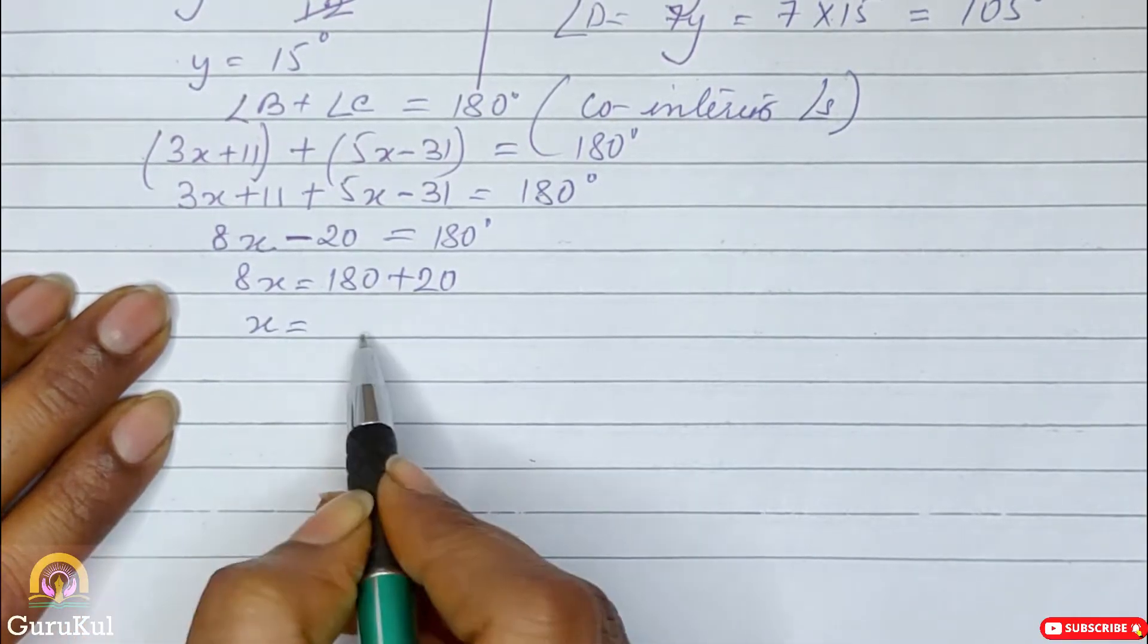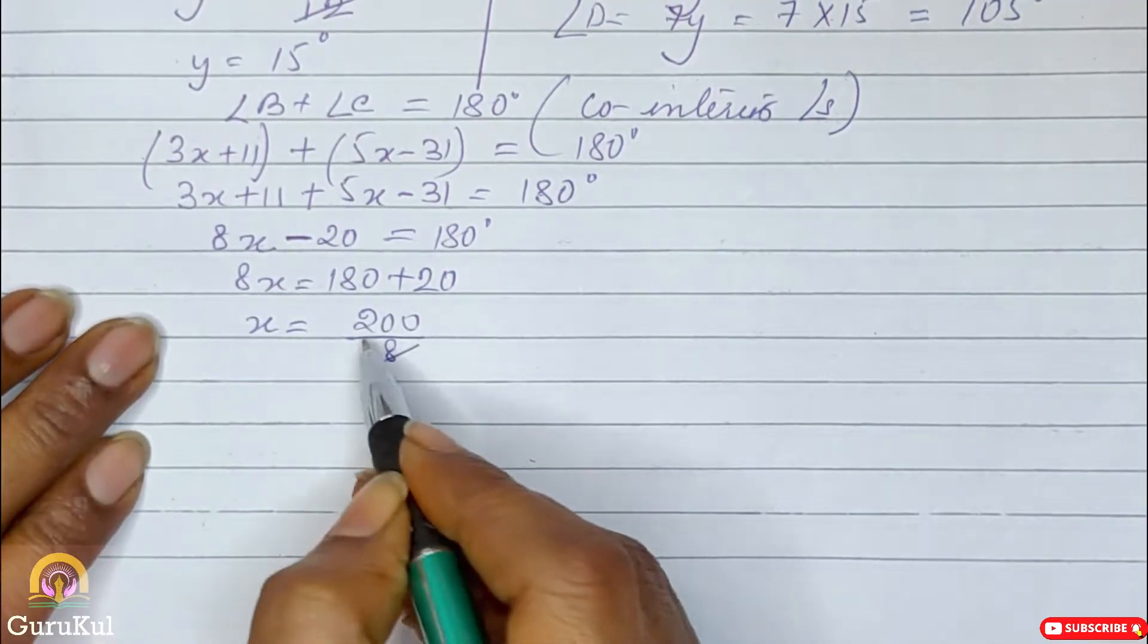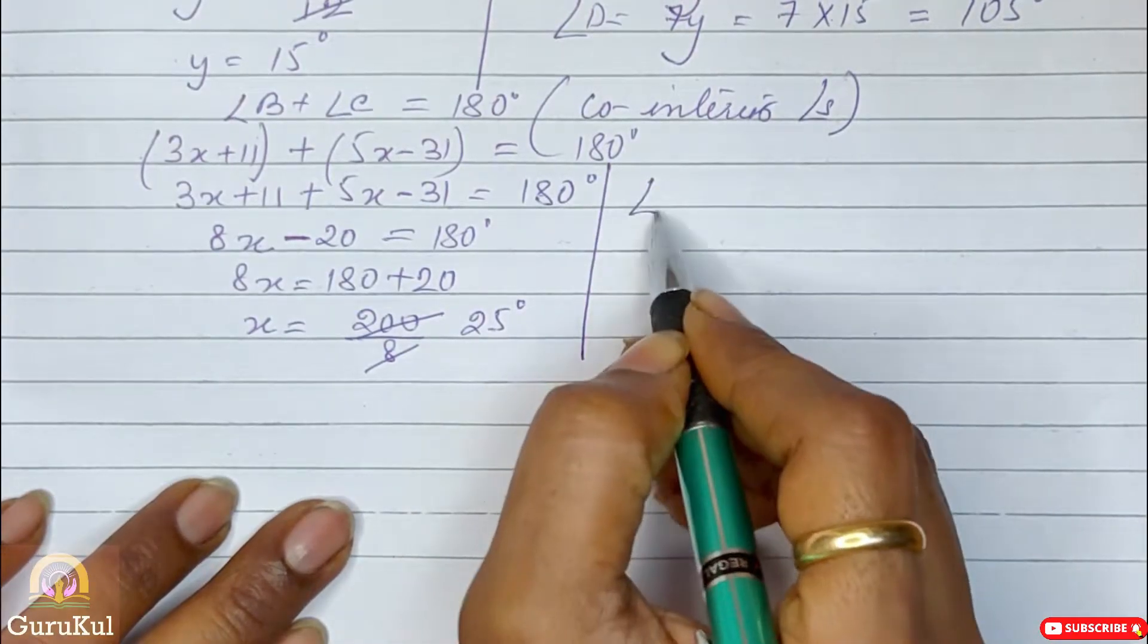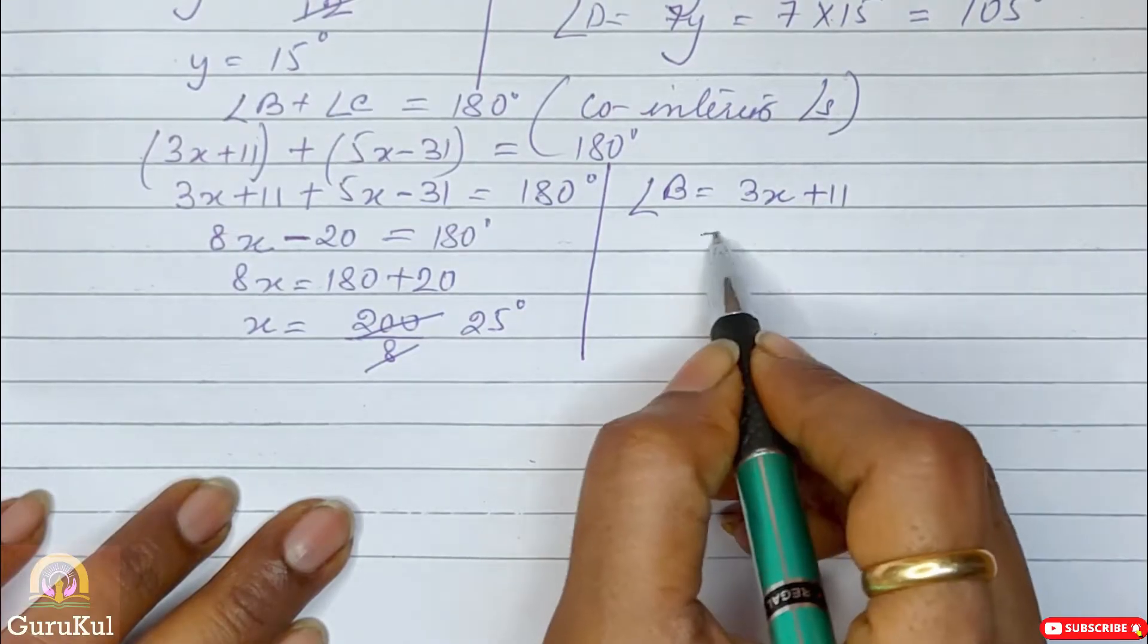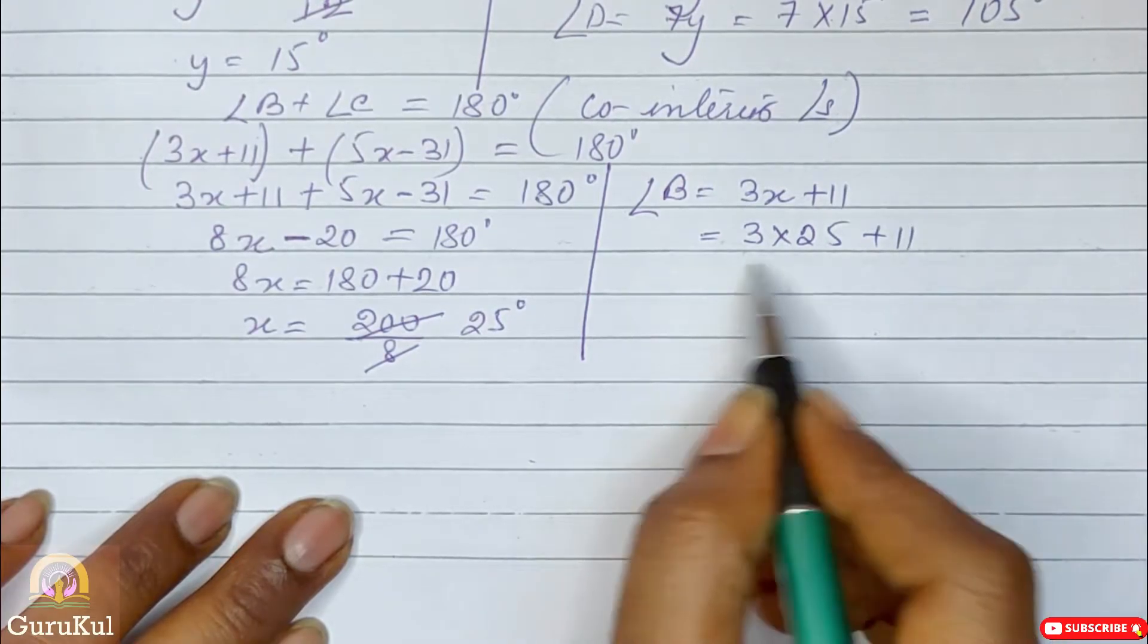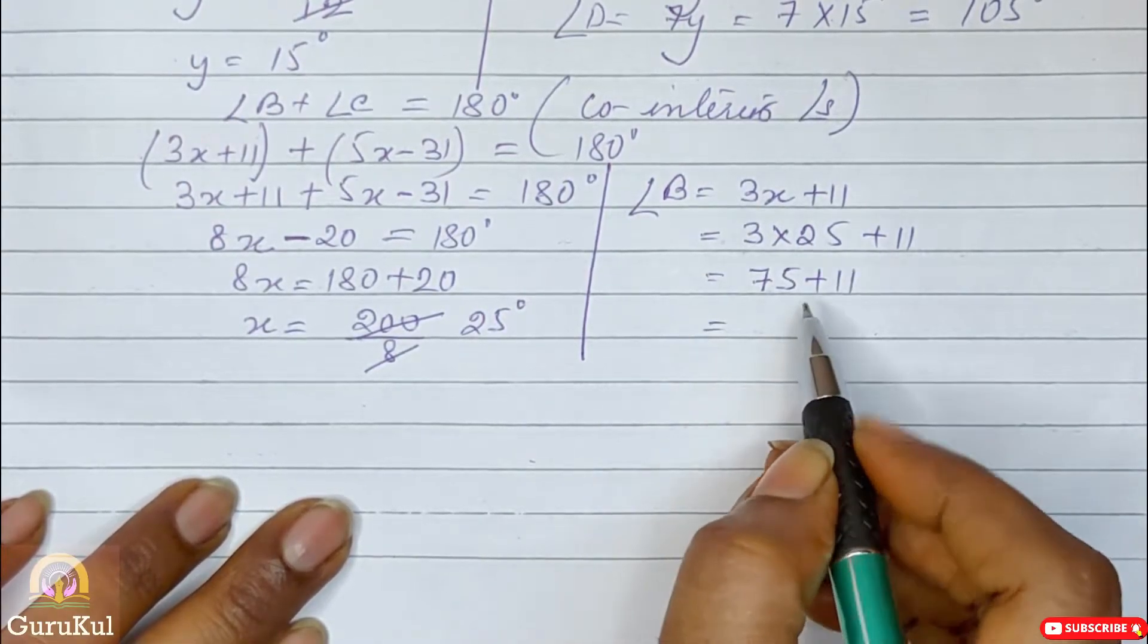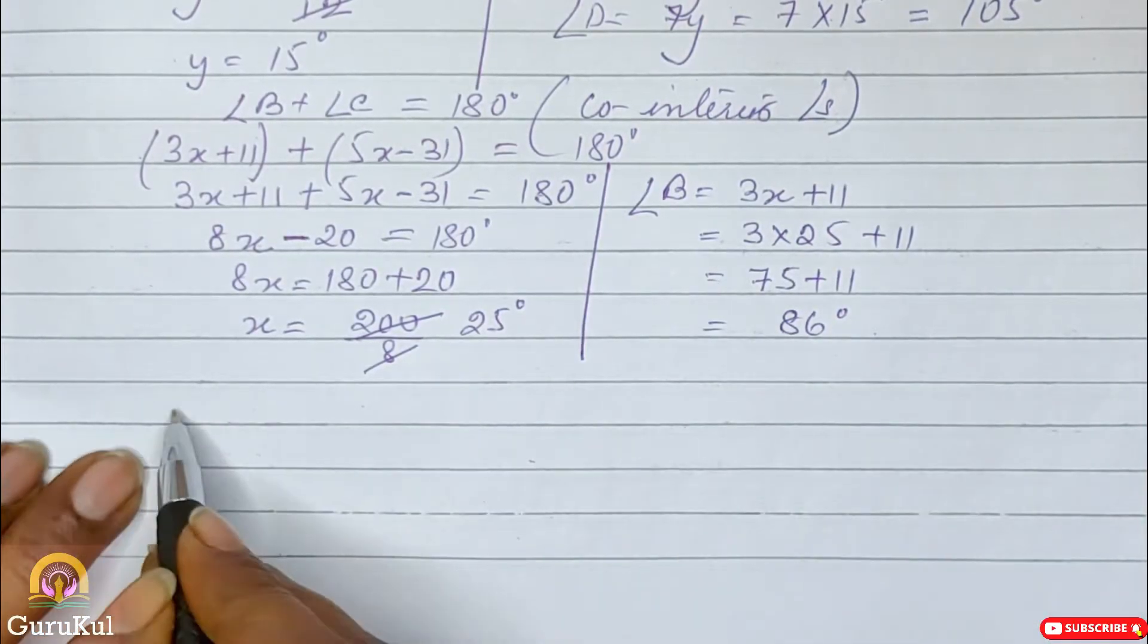So 8x is equal to 180 plus 20. So x is equal to 200 by 8. So after reducing, we got the value of x to be 25 degree. Now angle B is equal to 3x plus 11 which is 3 into 25 plus 11. So 3 times 25 is 75 plus 11 that gives us the answer of 86 degree. We got the value of angle B.